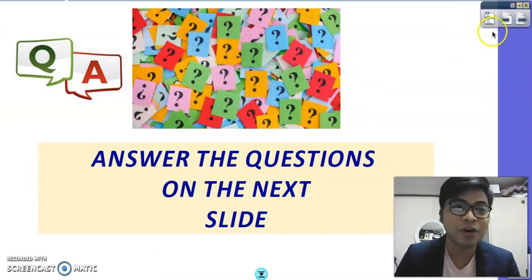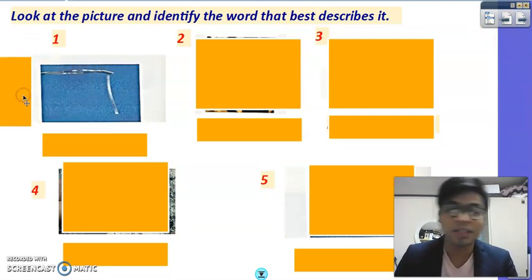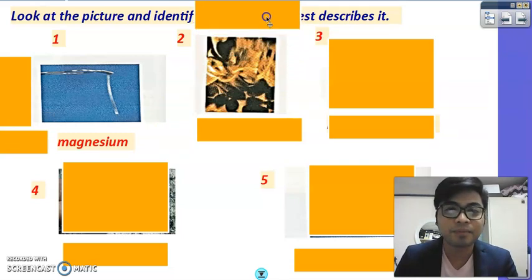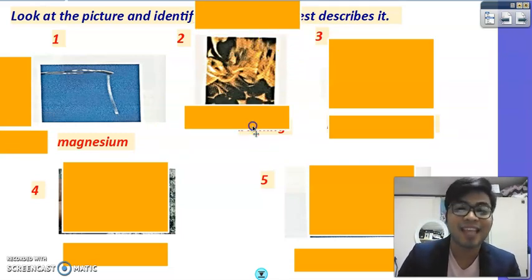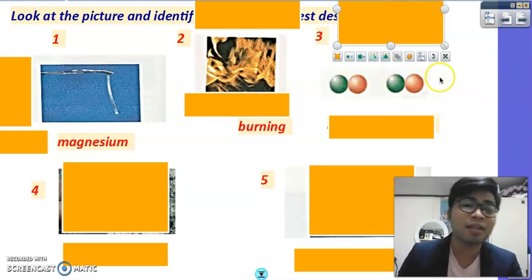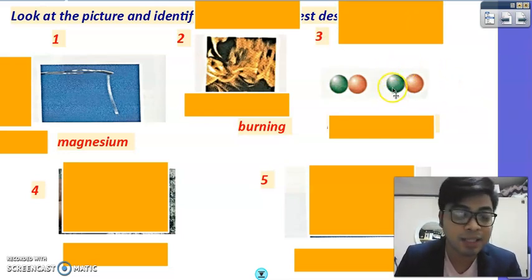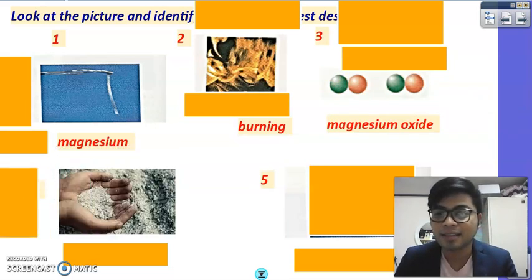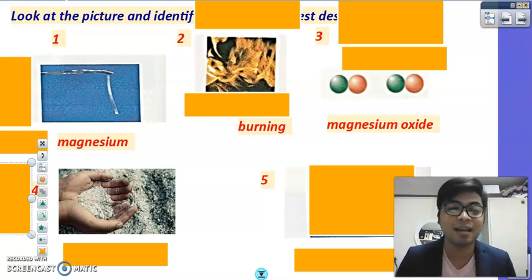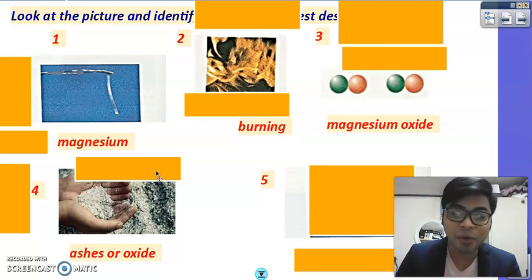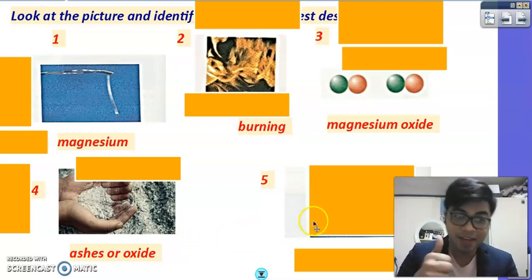Now let's answer some questions on the next slide. Question 1: what is being shown here? It is magnesium. Question 2: what is the process shown? It is burning, which is a kind of chemical reaction. Question 3: what are the two elements involved? Magnesium and oxygen — they form the compound magnesium oxide. Question 4: what is a product of any kind of burning? It is ash, ashes, or oxides. In the case of magnesium plus oxygen, we form magnesium oxide — it is still an oxide.